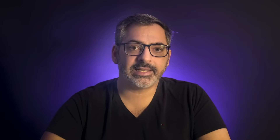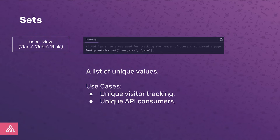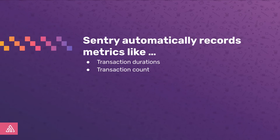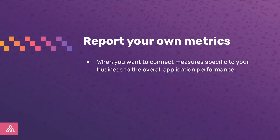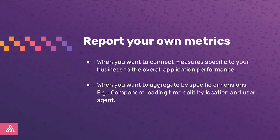And then there are sets. They let you store unique values — a typical use case would be tracking unique users or API consumers. You might still wonder when and why you would want to use metrics. Sentry records all typical performance metrics out of the box: transaction durations, web vitals, or error counts. Yet there are metrics specific to your business that tell you if your applications and services are healthy. By reporting such metrics to Sentry, you can connect those measures to overall application performance. With metrics, you can also report your own dimensions to aggregate them — for instance, the distribution of component loading time split by geolocation and browser. This is all possible with Sentry's metrics.